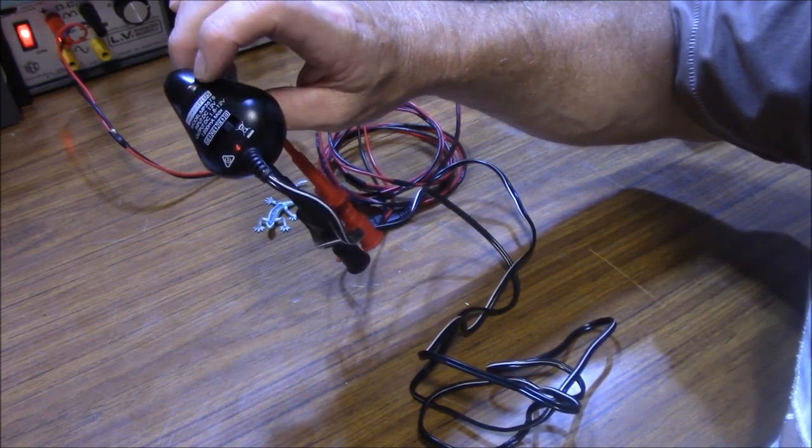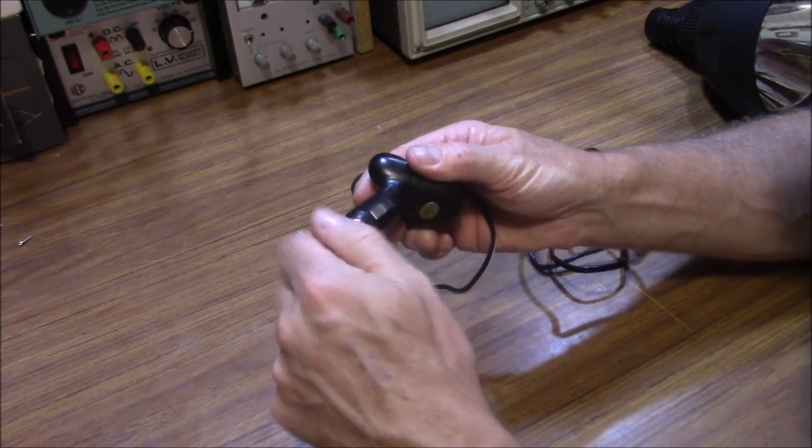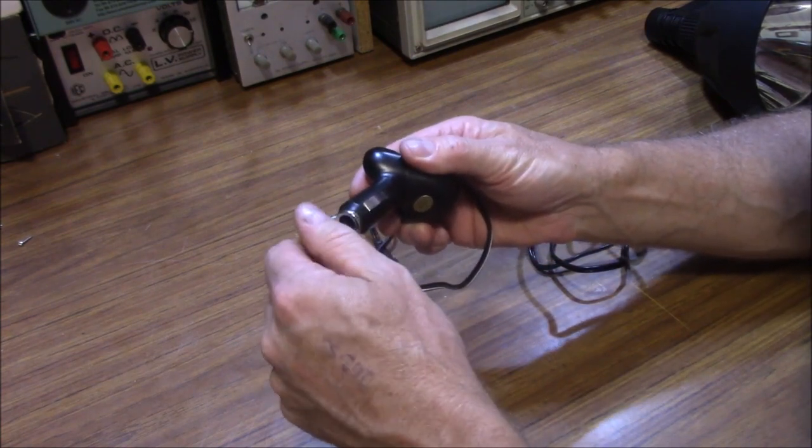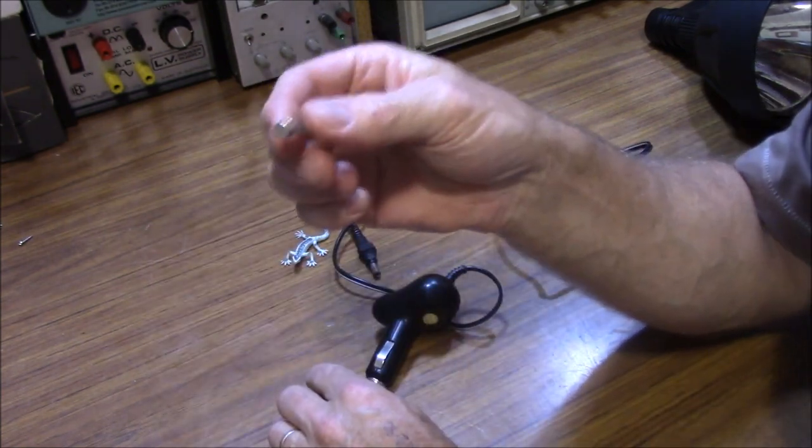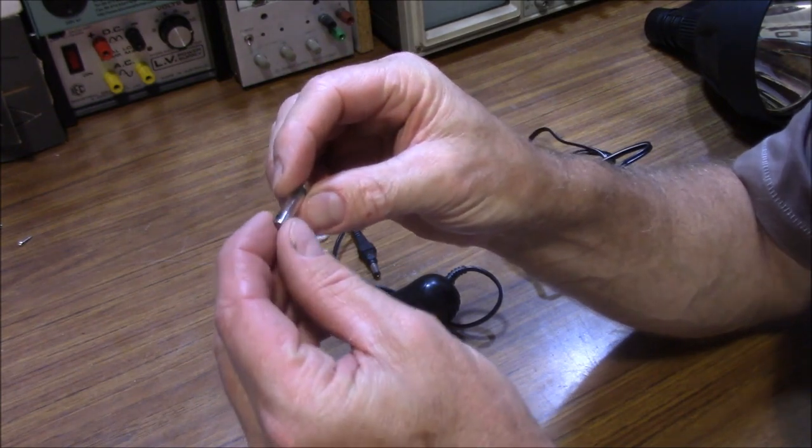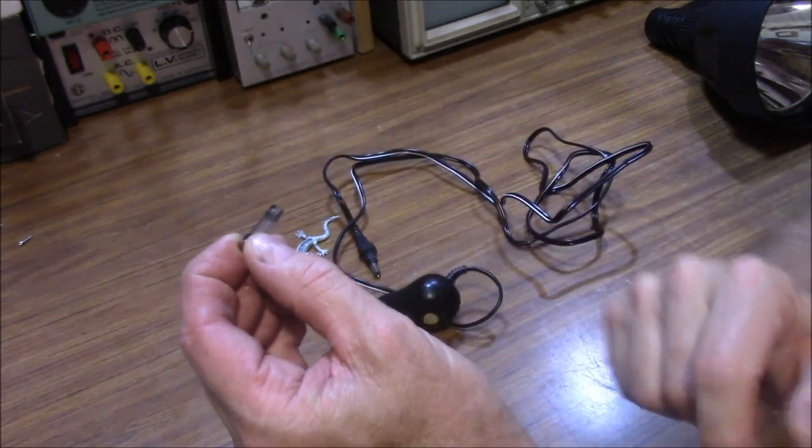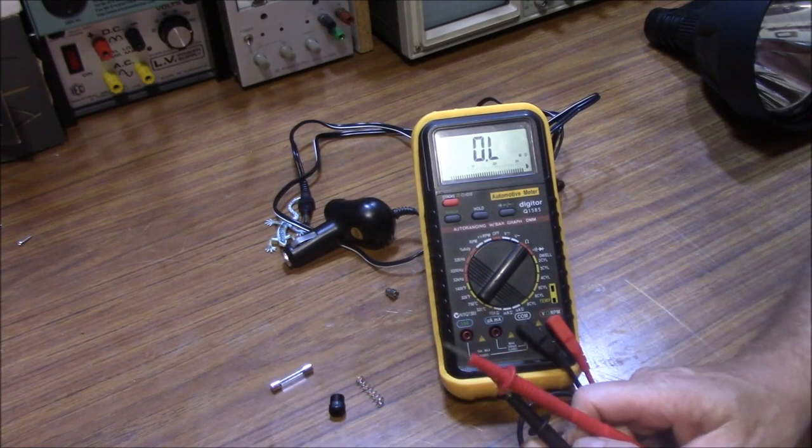Let's pull it apart and see why. So disassembly is quite easy on this one. You just unscrew the end knob there. That comes apart and hey presto, look at this. A fuse. So what's the first thing we start with? You start with the simple things first. Visually, it looks like it's blown, but let's test it with a multimeter. It's got a blown fuse.